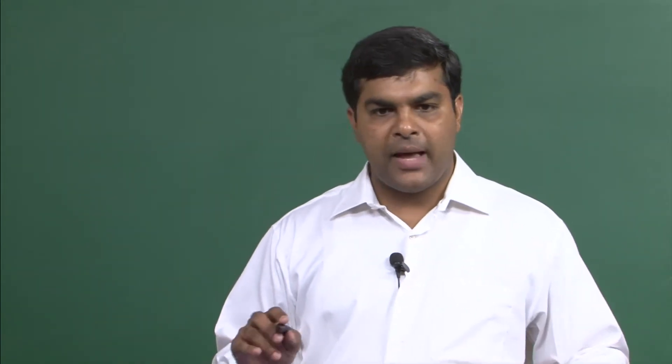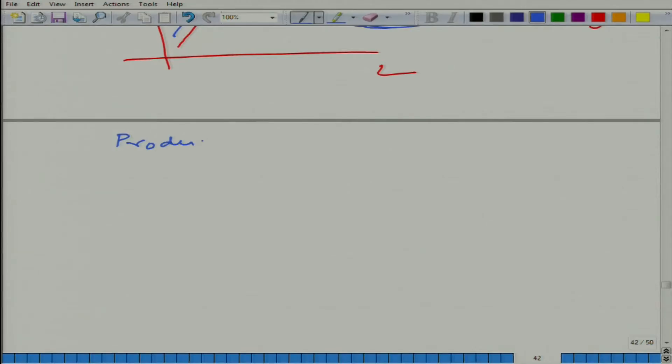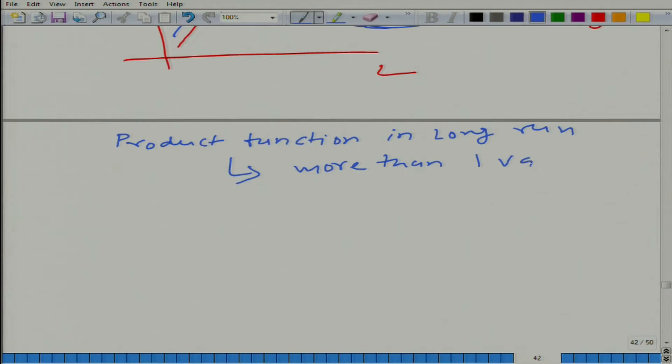Let us recap what we have done. We have been talking about production function in the short run, or production function in one variable. Let us make it a little more complicated and more realistic. Now we have the production function in the long run, or another way to put it is that the production function is in more than one variable.